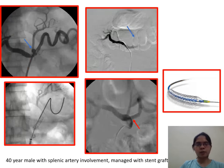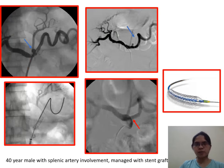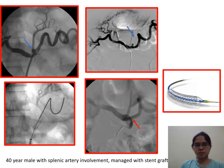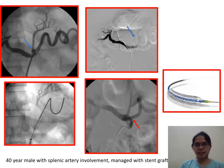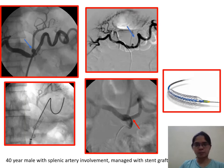Case 4: A 40-year-old male with splenic artery involvement, which was managed with stent graft placement.